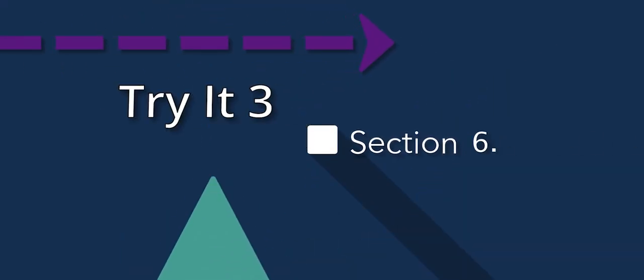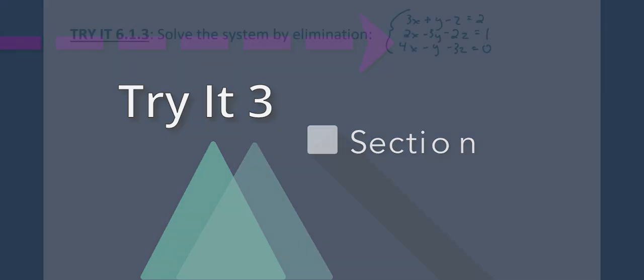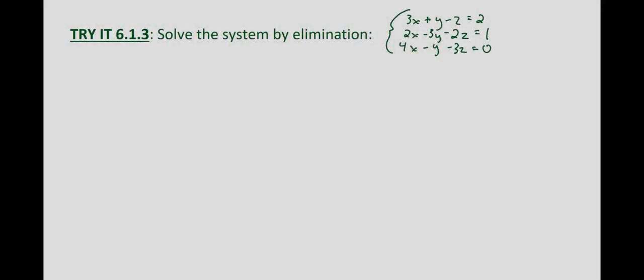With this problem we are asked to solve this system of equations by elimination. That starts with eliminating one variable to bring it down to a system of two equations and two unknowns, then eliminating another variable from those two equations and two unknowns, solving for one of the variables, and then using back substitution.